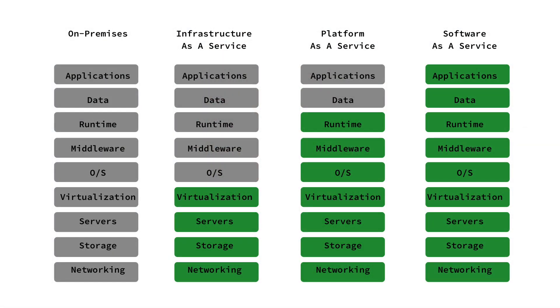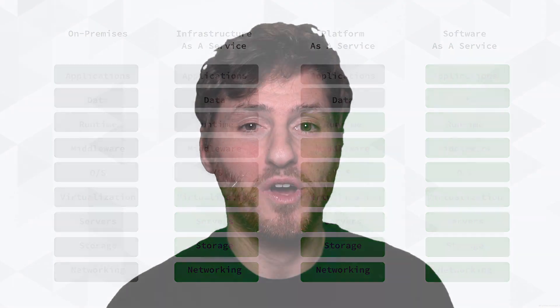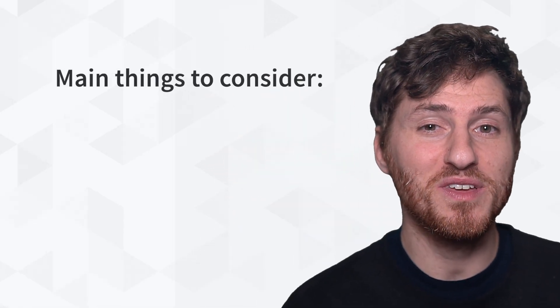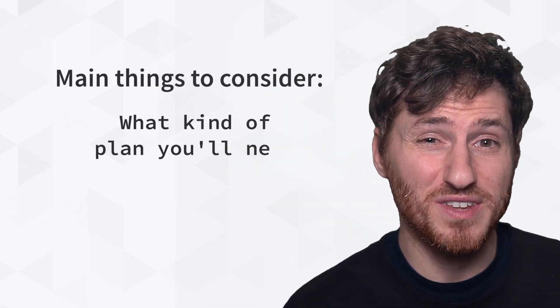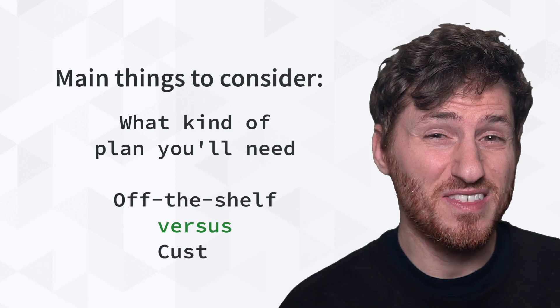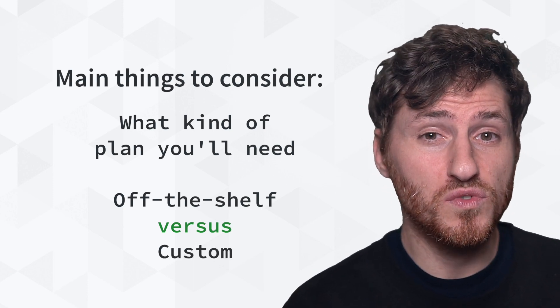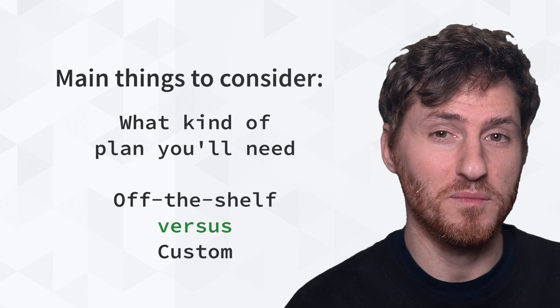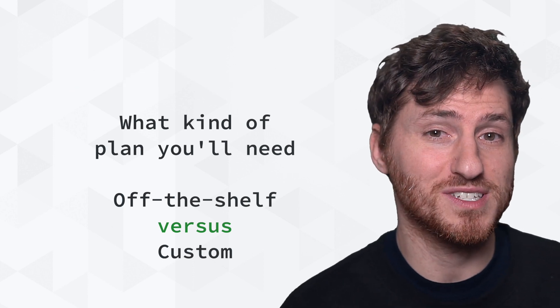Infrastructure as a Service is a full self-service for things like networking and storage. Businesses can lease resources on demand and as needed instead of having to buy hardware outright. These cloud providers manage the servers, hardware, networking, virtualization, storage, and more. When purchasing cloud computing services, the main things to consider are what kind of plan you'll need. Off-the-shelf solutions are fine, unless you're really trying to take your business seriously — and that's why people choose Linode, because it's custom.